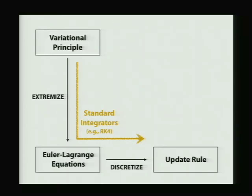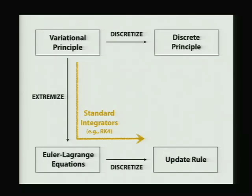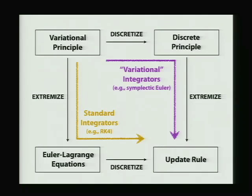There's another way to go on this diagram, which is we could discretize our variational principle — our condition that our system has to satisfy — and get a discrete variational principle. Then we find discrete equations of motion that satisfy that principle. This approach is called the variational approach, and this is the one that we're going to take in our work.